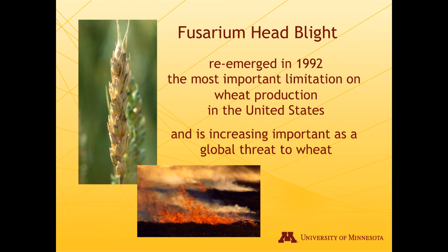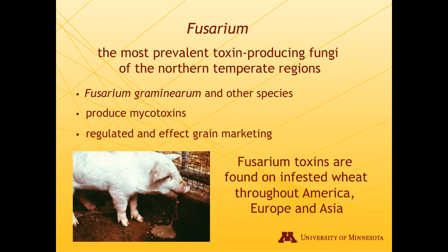Fusarium head blight is an important disease globally, now seen in every part of the world where wheat is produced. Fusarium fungi are the most prevalent toxin-producing fungi in the northern temperate region — found throughout Europe, parts of Asia, and North America. A number of different species produce mycotoxins, and these are regulated and affect grain marketing. In the U.S. there are limitations on how much toxin can be present in grain when it is being marketed.